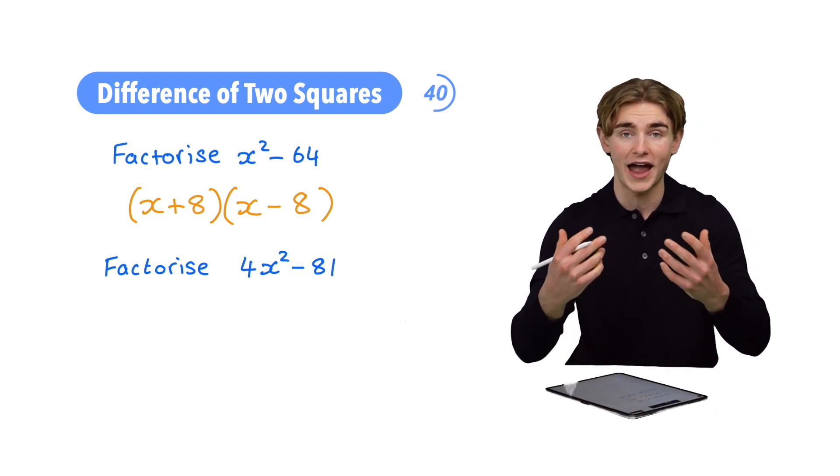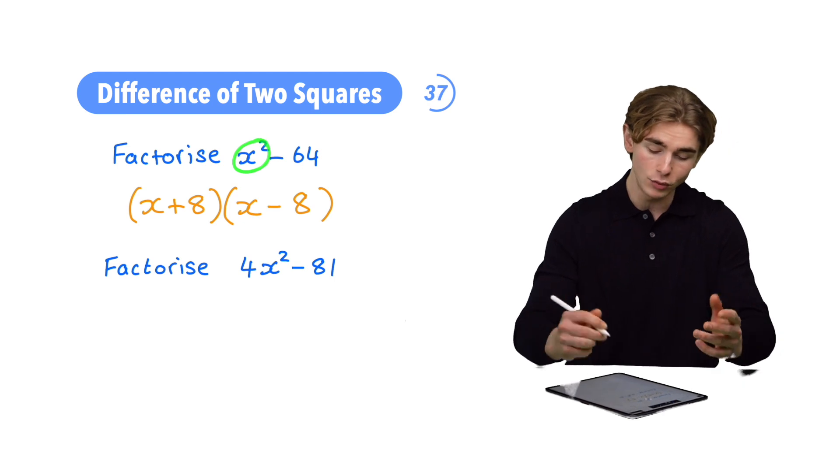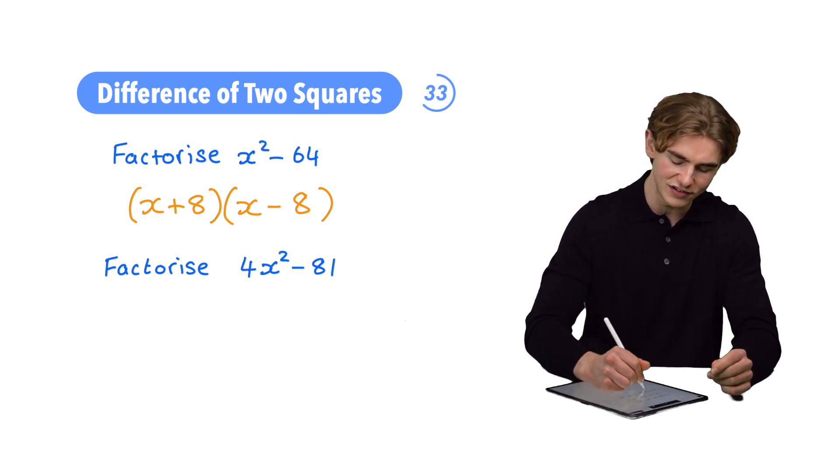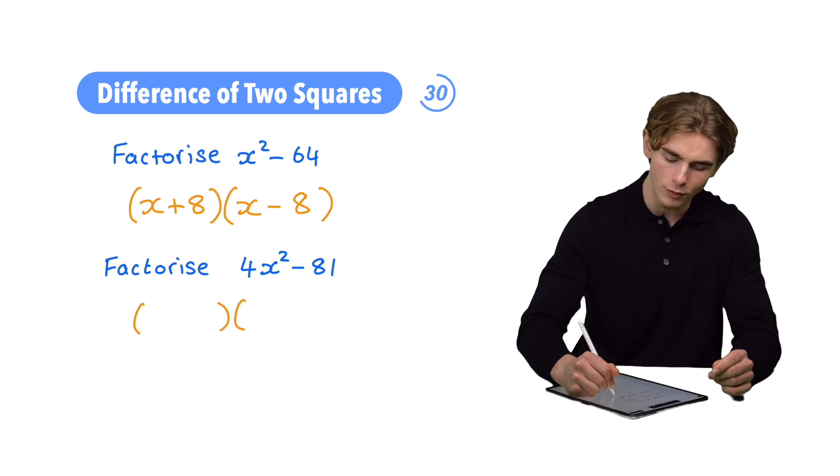Now, this can be used when we have just an x squared but also when we have a number in front of our x squared, it's going to be exactly the same. So, first off, write out our double brackets.